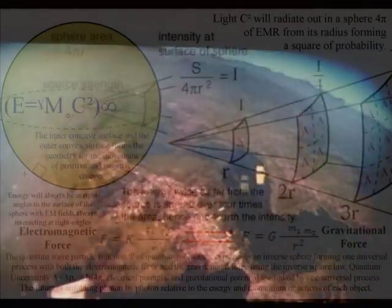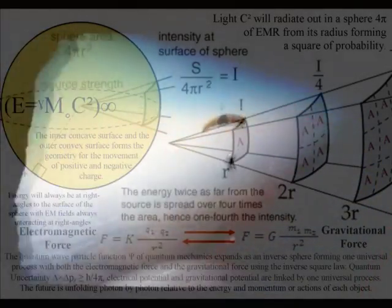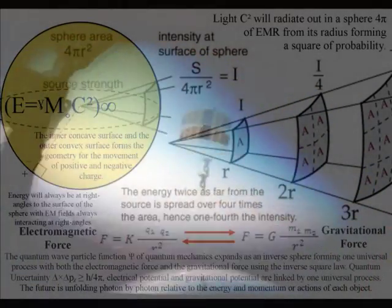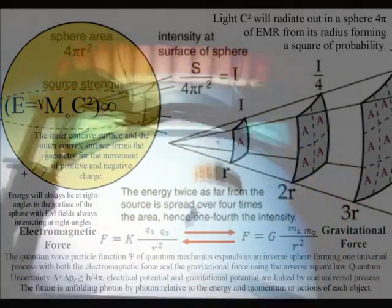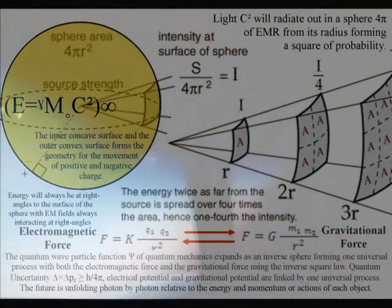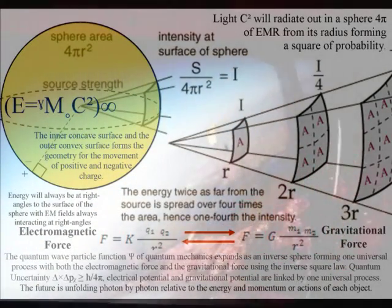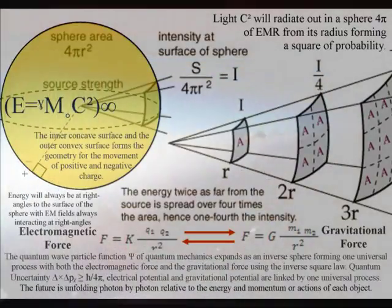This dynamic process can be represented mathematically, with electromagnetism and gravity sharing the inverse square law, representing the geometry of this universal process, with gravitation being a secondary force to electromagnetism.